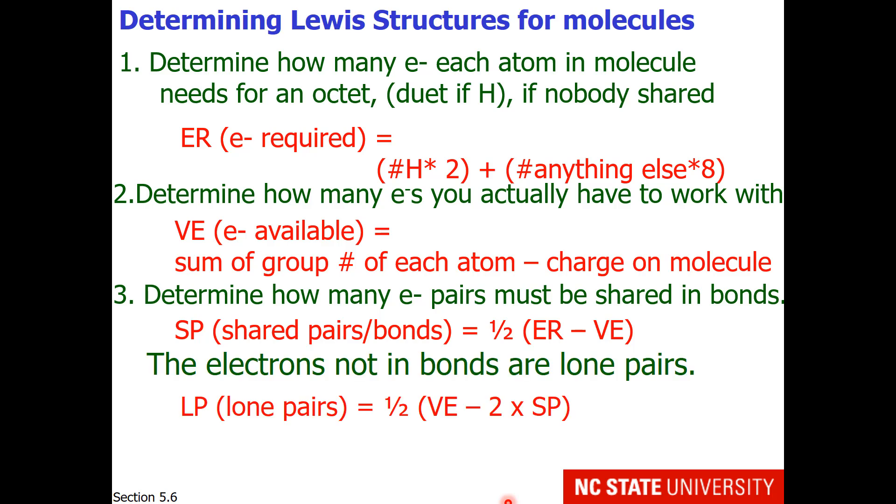The electrons not in bonds are the lone pairs, and you can figure that out by the valence electrons minus 2 times the shared pairs, multiplied by one-half.